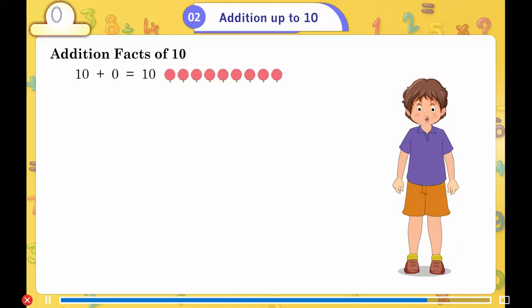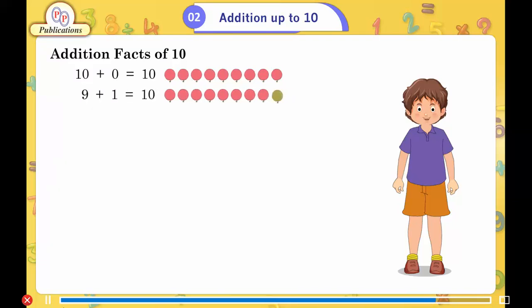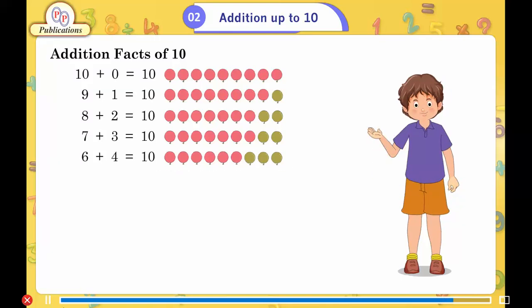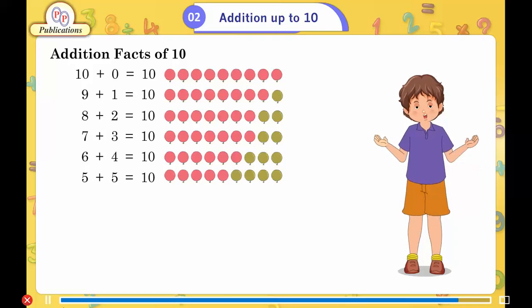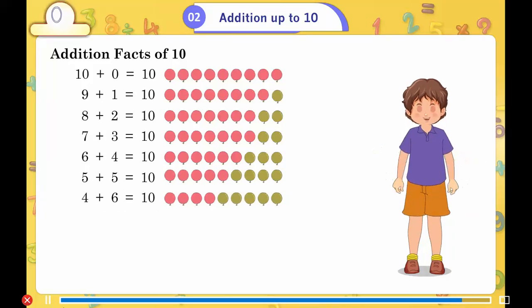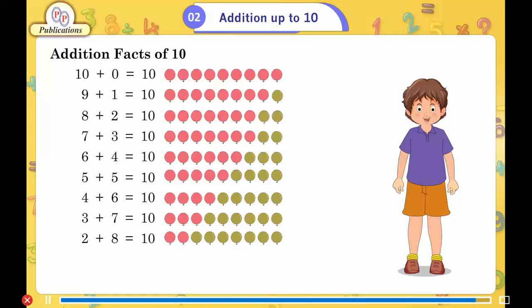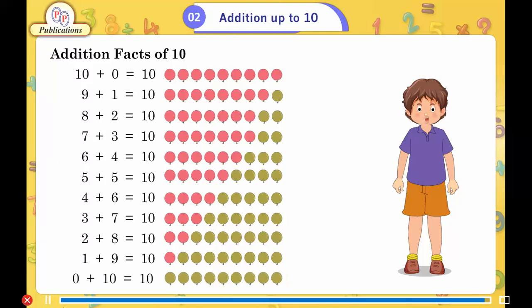Addition facts of 10: 10 plus 0 is equal to 10, 9 plus 1 is equal to 10, 8 plus 2 is equal to 10, 7 plus 3 is equal to 10, 6 plus 4 is equal to 10, 5 plus 5 is equal to 10, 4 plus 6 is equal to 10, 3 plus 7 is equal to 10, 2 plus 8 is equal to 10, 1 plus 9 is equal to 10, 0 plus 10 is equal to 10.